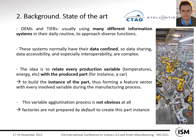What we find in factories — OEMs and tiers — is that they usually have many different information systems in their daily routine to approach diverse functions. These systems normally have the data confined, so it's not obvious how to reach this data because they usually don't share data between them. The final objective is to relate every production variable — temperatures, energy, welding parameters, whatever happens while a part is being produced — with a specific produced part, for instance a car. We call this the "instance of the part": a feature vector with every involved variable during the manufacturing process. Building this instance of the part is not obvious at all.